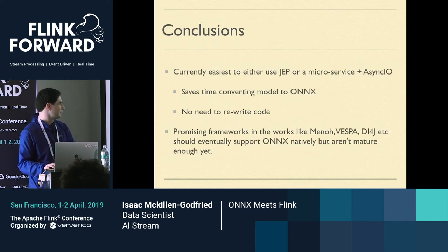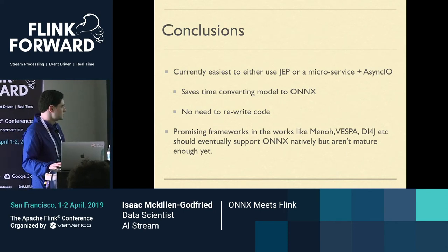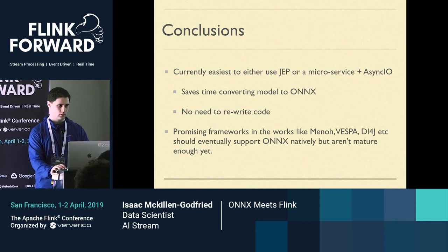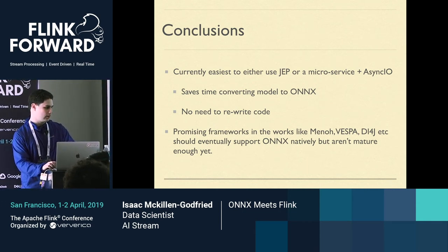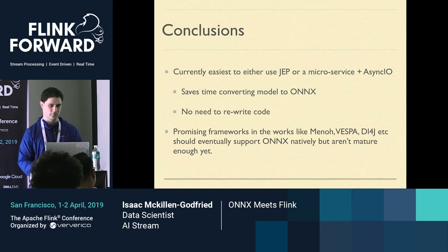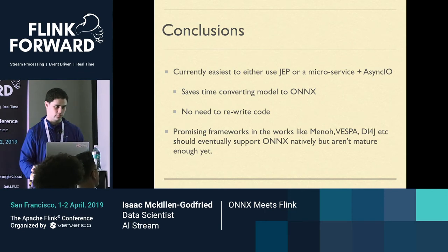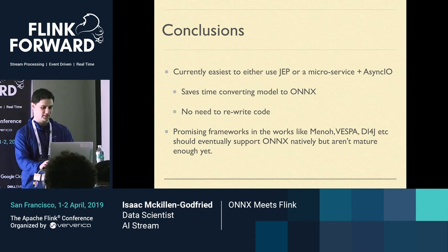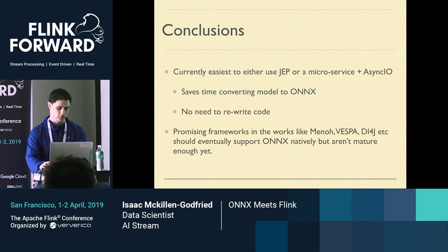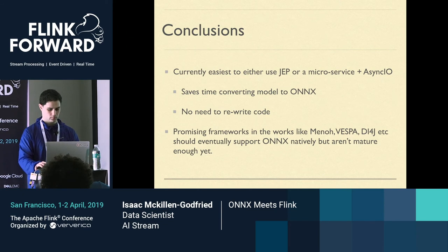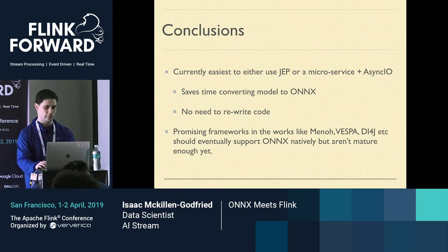In conclusion, currently the easiest way is JEP or a microservice. I still hope there will be full-fledged ONNX support in one of these Java frameworks — whether that's Menno, CNTK, or something else — as that would simplify things. But currently, this approach saves the time of converting the model to ONNX, and there's no need to rewrite your Python code. In the future, maybe one of these ONNX backends will work well in Java, but right now they're too immature with too few operations supported.